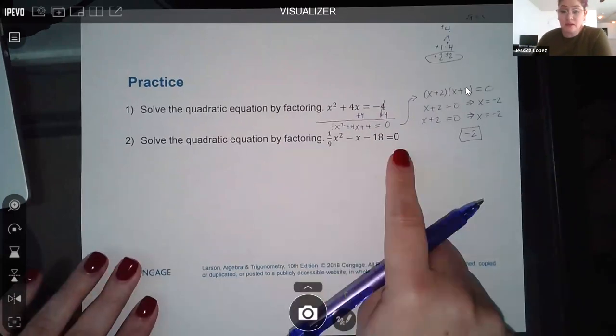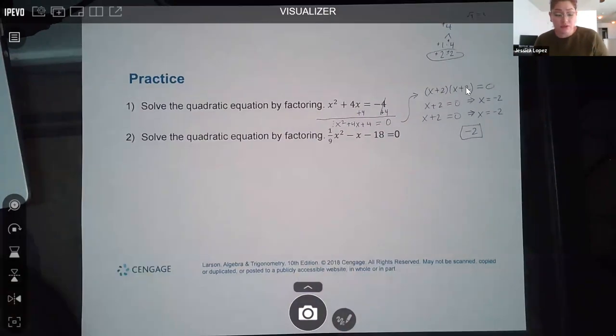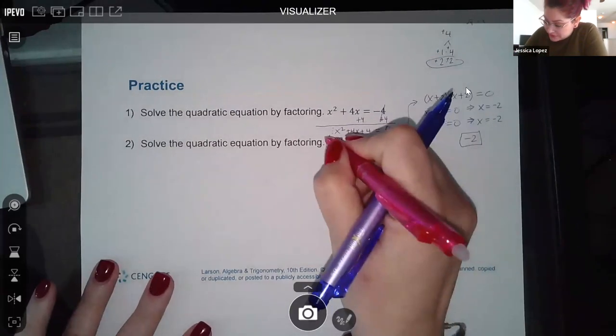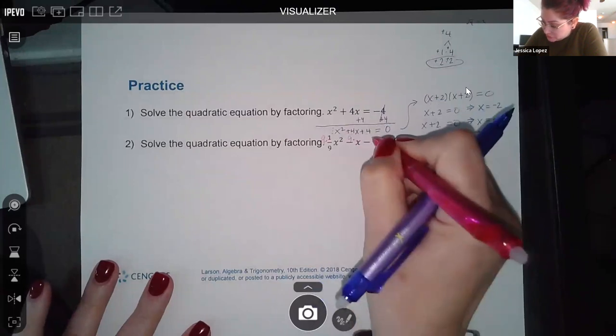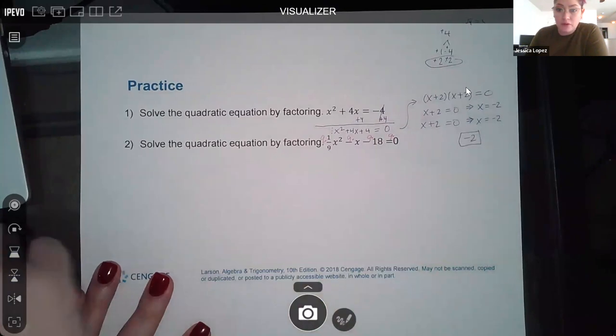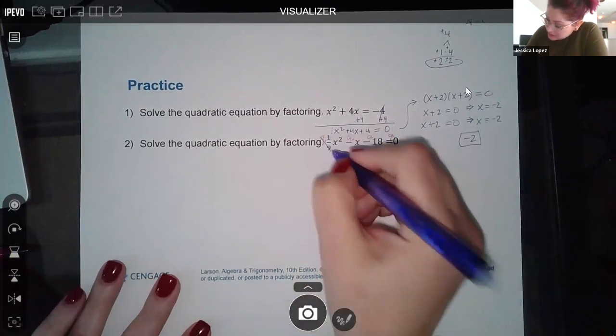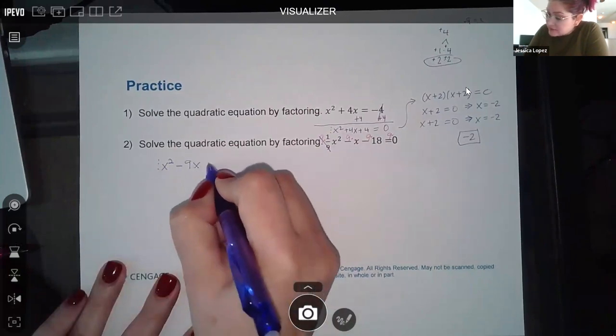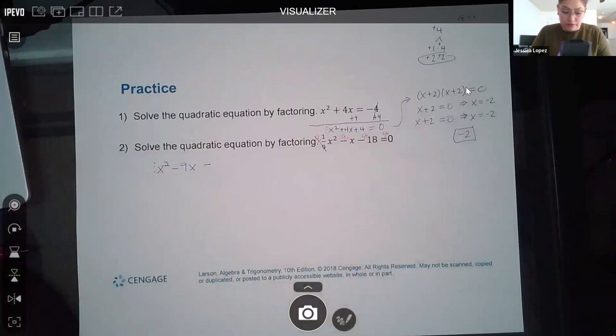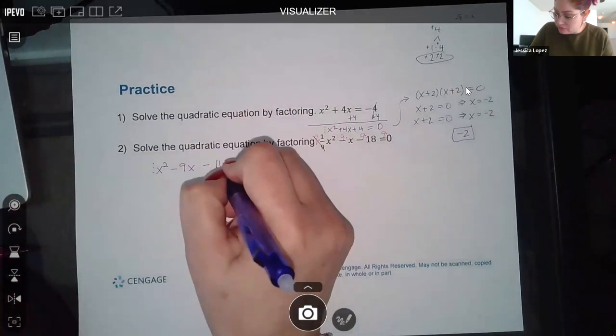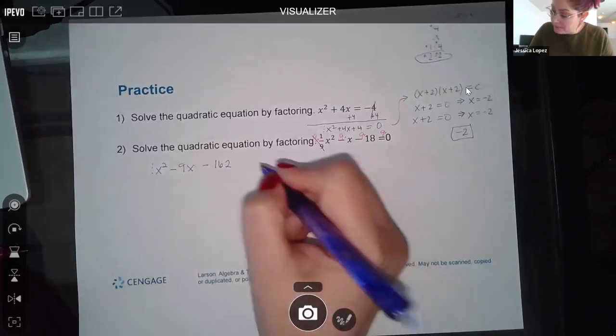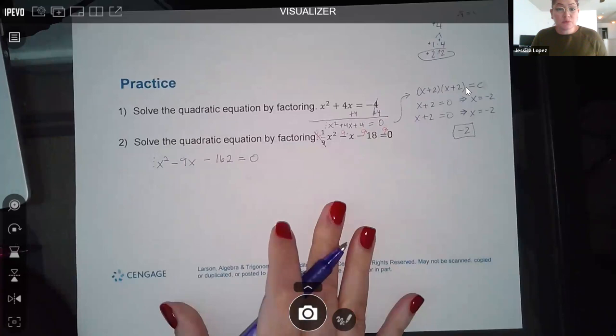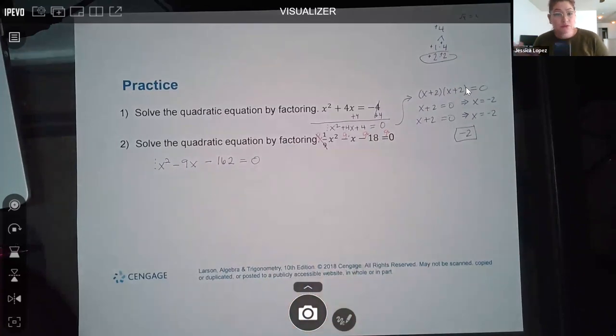For a problem like this, the first thing you always want to do when solving equations is eliminate the fractions and the way you eliminate fractions is by multiplying by the common denominator. And since the only denominator I have here is 9, I'm going to multiply every single term by 9. What that does is over here it cancels and I just have 1x squared. Now I have minus 9x minus 162, 9 times 18 and then equal to 0. Now this one is already equal to 0, so we don't need to move anything over.